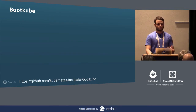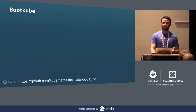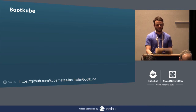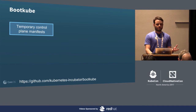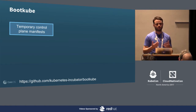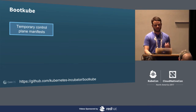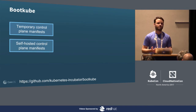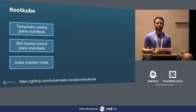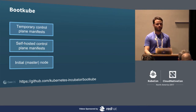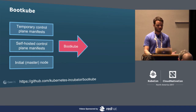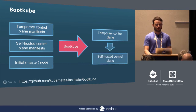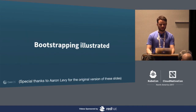The project I'm going to talk about today is called Bootkube. It's a Kubernetes incubator project. The way it works is you give it temporary control plane manifests — pod manifests that purely describe pods because they need to run on the kubelet. These describe your API server, controller, and scheduler. You also need your self-hosted control plane manifests, which describe your permanent self-hosted cluster once it gets running. And lastly, you need an initial master node — though there's nothing really special about it; it's just the node we choose to bootstrap on.